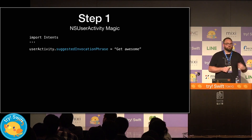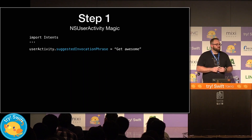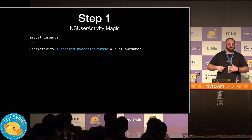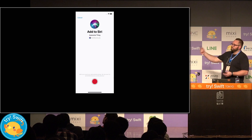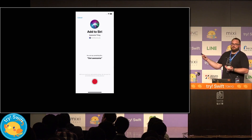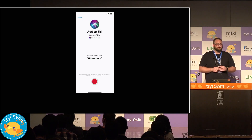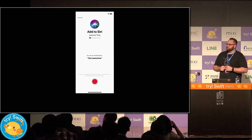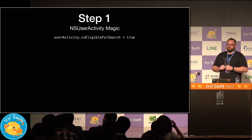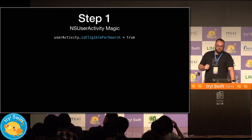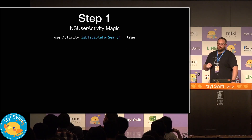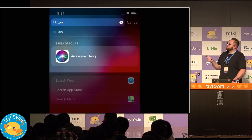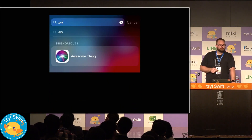There are a number of things we can do to improve on this process. We'll begin by importing our intents framework and setting a suggested invocation phrase. As you might imagine, this is simply something that we can point the user to — a suggestion of what you might say to encourage this action. So it takes our bland, clueless interface and makes it a little less convoluted. Now the user looks at this and sees they can say something like 'get awesome.' There's one more thing we can do to make this easier to access for your users, and that is to set a property called `isEligibleForSearch`. By setting this property to true, we're supporting spotlight search, so all your user has to do is pull down on the home screen and begin typing something related to the shortcut, and it'll show up for them. It's really quite simple.